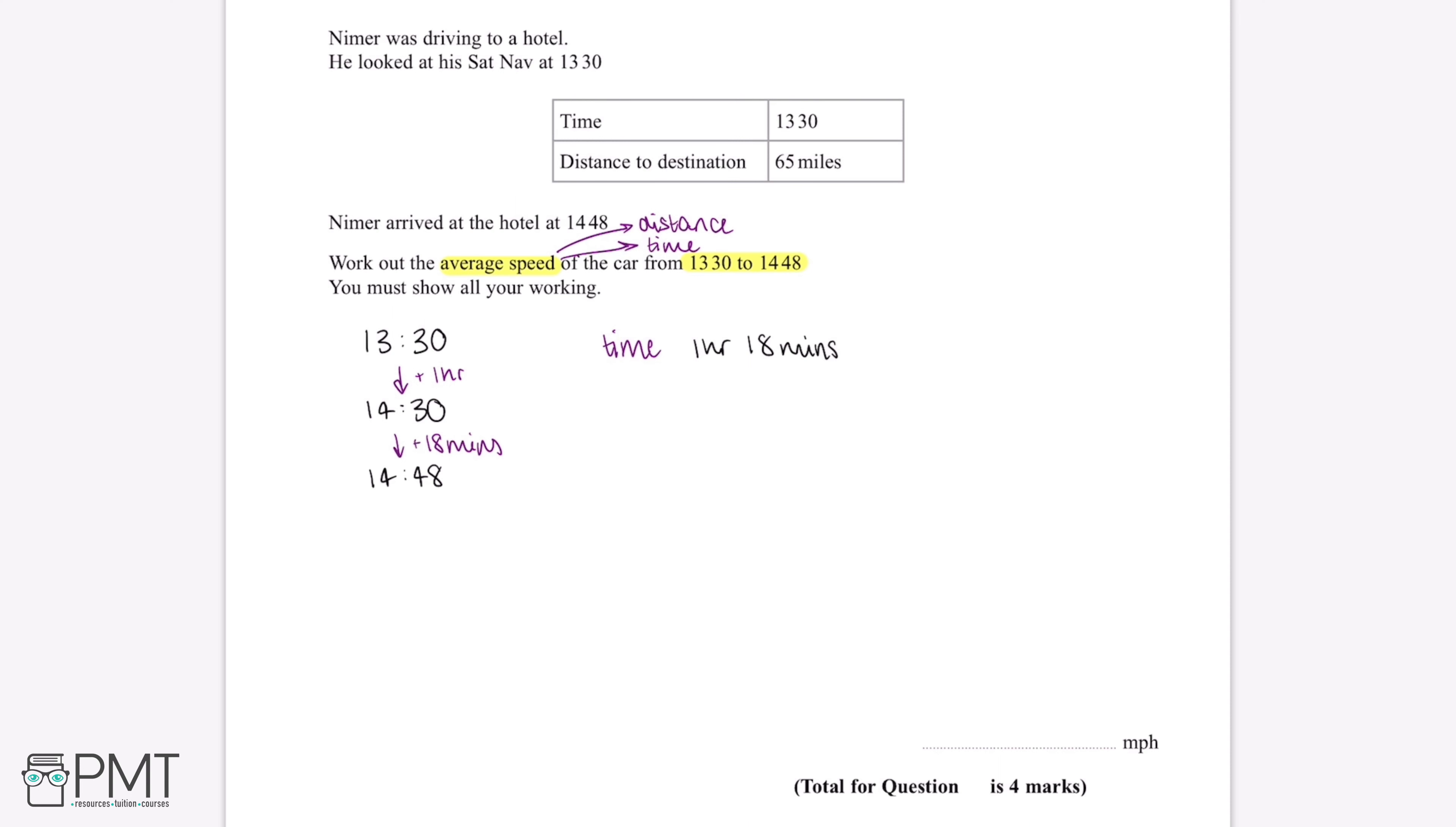We've worked out the time between 1:30 and 2:48. However, we can't work out the average speed when the time is in this format. We need to convert this into hours.